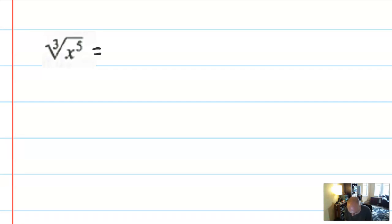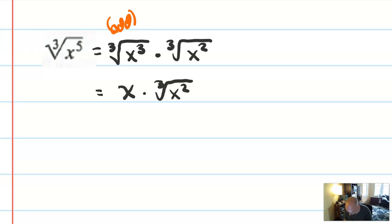I want to split that up into the cube root of x cubed times the cube root of x squared. Why would I do that? Well, because I know that the cube root of x cubed simplifies out to x. I know it's not absolute value x because this is an odd index. So I have an odd index of an odd power. And then I'll write x times the cube root of x squared. And that's probably where I would leave it.